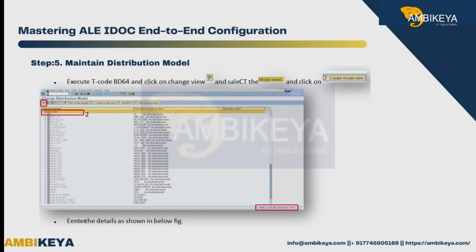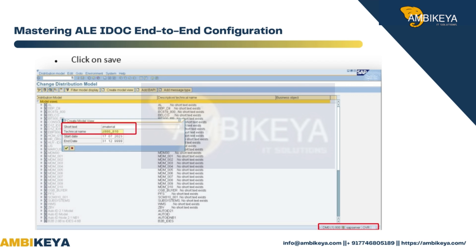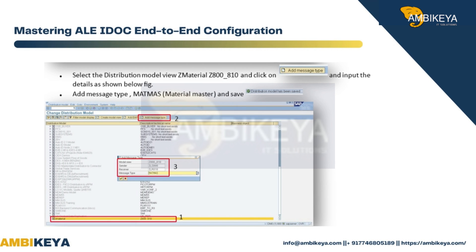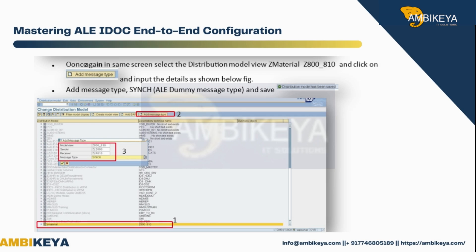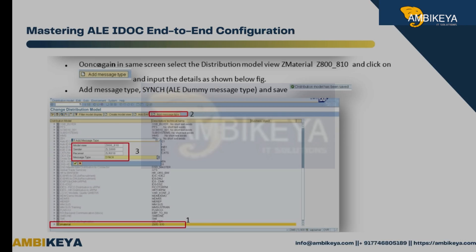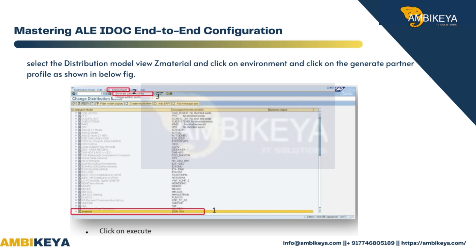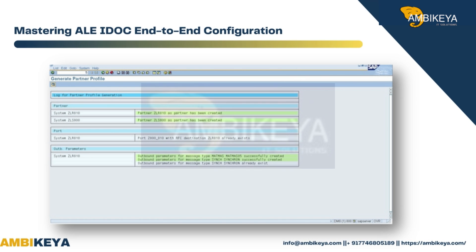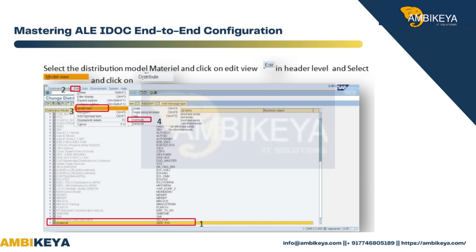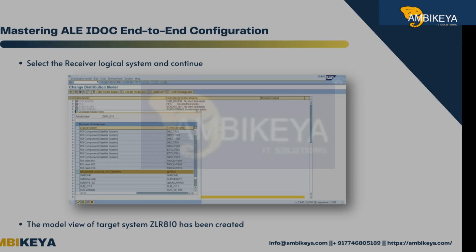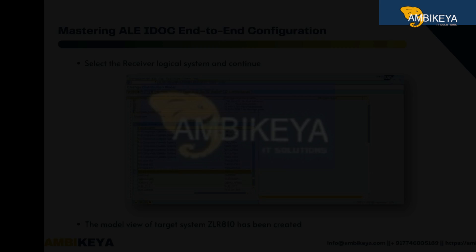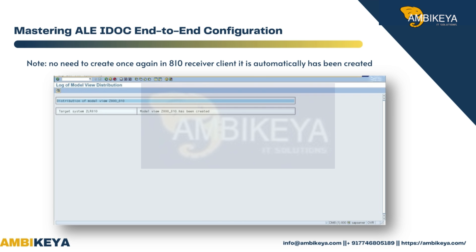Step 5: Maintain distribution model. The distribution model has been created and updated as Z800_810. Select the distribution model view for material, click on Environment, and click on Generate Partner Profile, as shown in the figure below — everything should be in green color. Select the receiver logical system and continue. The model view of target system ZLR810 has been created. Note: No need to create it again in client 810 receiver — it is automatically created.